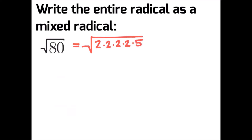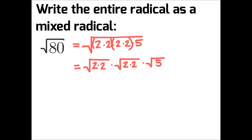Since we're dealing with square roots, we want to look at our numbers and see if we can find any pairs. We have two sets of pairs, and we're going to rewrite our radical as the square root of 2 times 2 — that one pair — times the square root of 2 times 2 — the other pair — and whatever is left over, the root of 5.